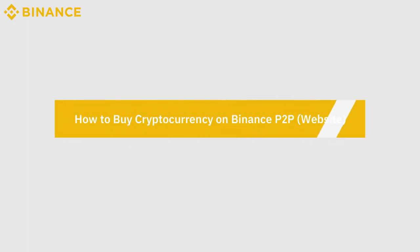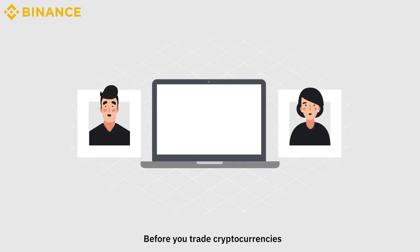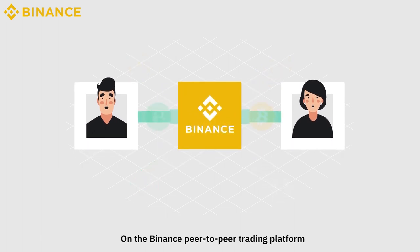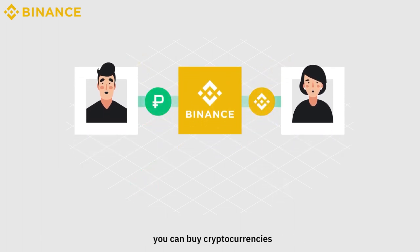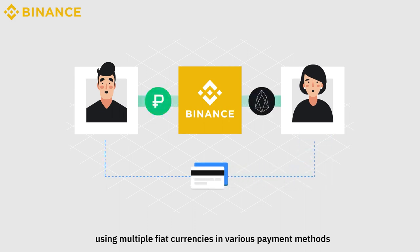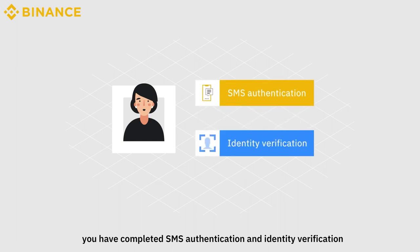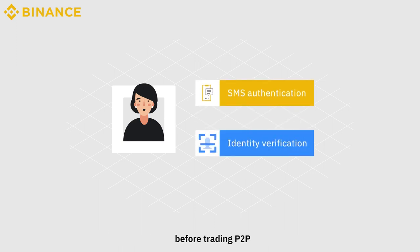How to buy cryptocurrency on Binance P2P. Before you trade cryptocurrencies, you need to buy cryptocurrencies first. On the Binance peer-to-peer trading platform, you can buy cryptocurrencies using multiple fiat currencies in various payment methods. Please make sure you have completed SMS authentication and identity verification before trading P2P.